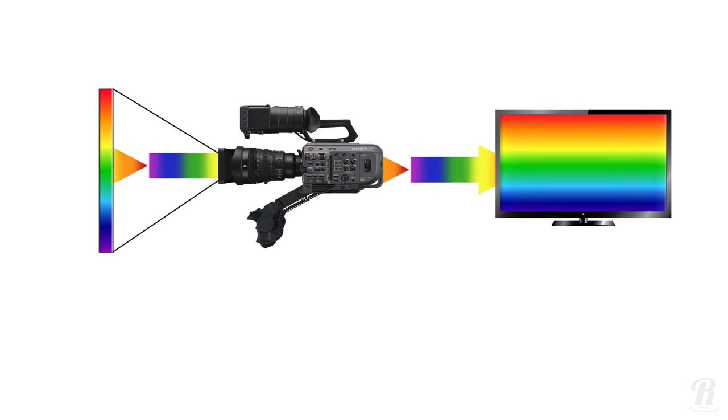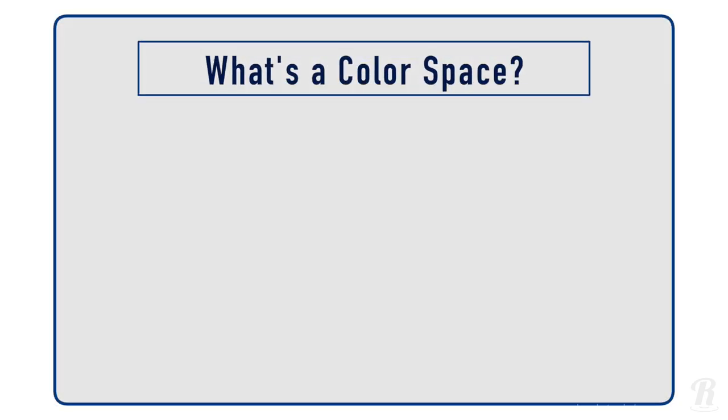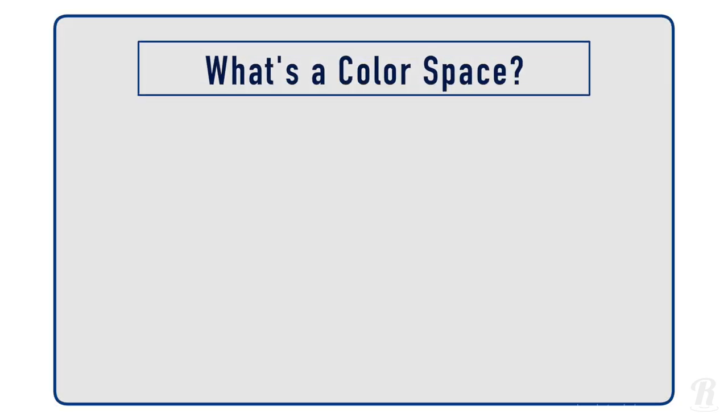They identify the range of hues, saturation, and brightness levels that cameras capture and displays display. A color space is defined by two key ingredients: gamma and gamut. These words sound similar, but they refer to completely different things. Let's start with gamut.